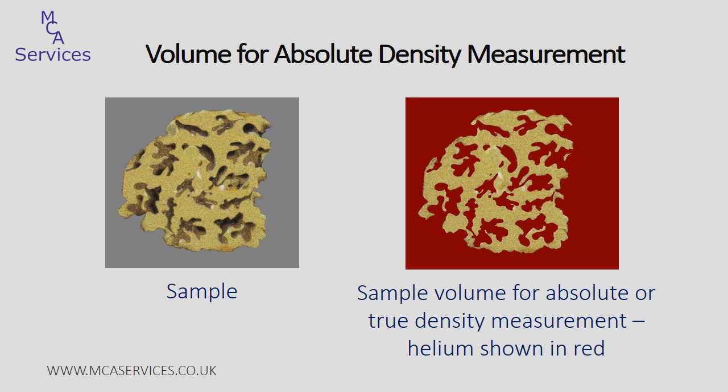The difference comes down to the sample volume used in the calculation of density. For absolute density, we want to measure just the volume of the solid material and exclude the volume of all open pores — that's shown in the diagram on the right-hand side. If the sample contains any closed pores, pores that don't have a route through to the outside of the sample, the volume of these pores will also be included in the measurement of absolute density.